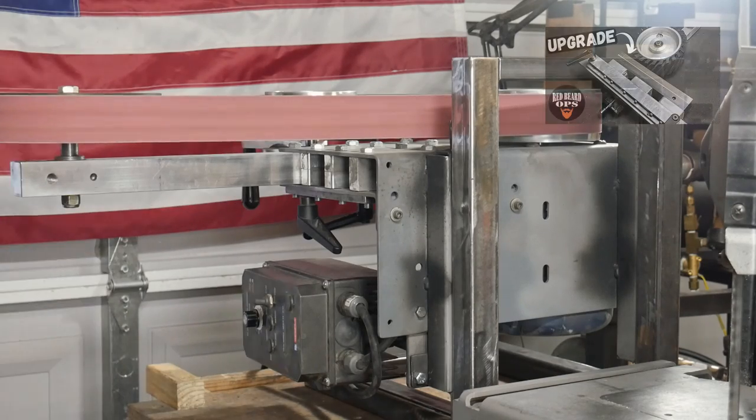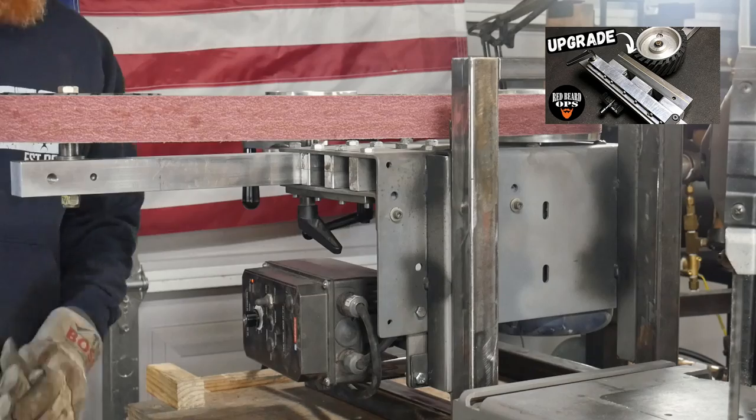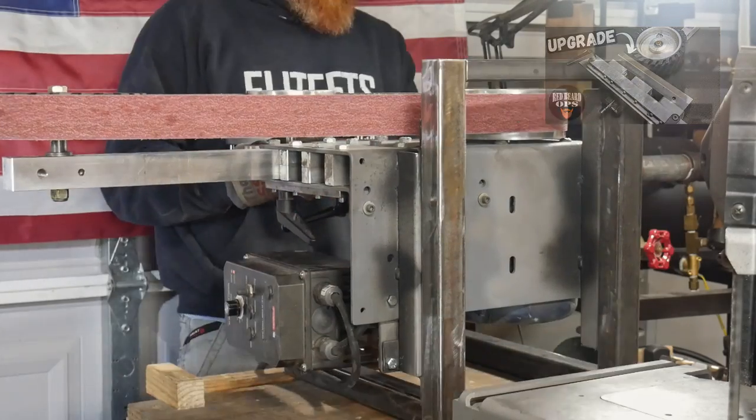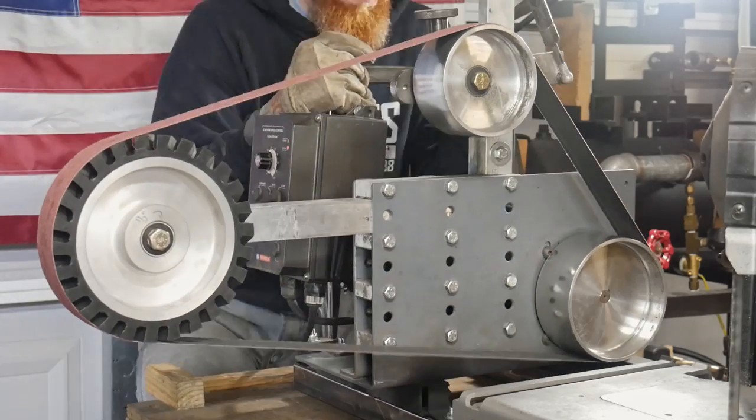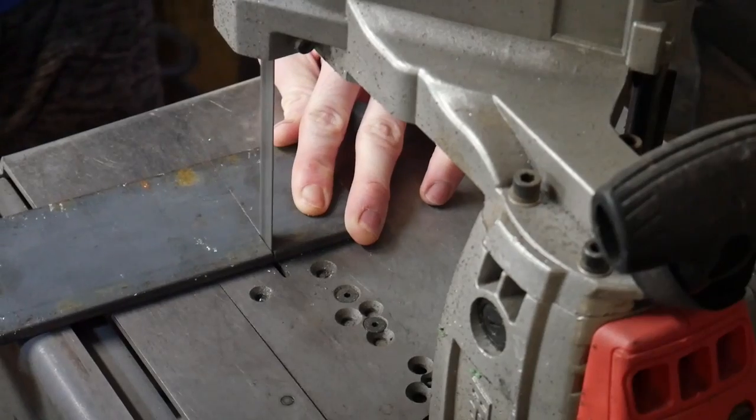If you're super cheap you could actually just bolt this frame down or clamp it down to the work table so that this thing is not going to tip on you. That's actually what I did on the surface grinding attachment update video that I put out last week.